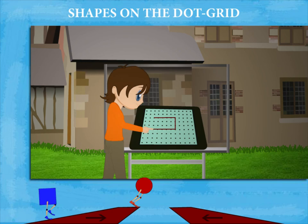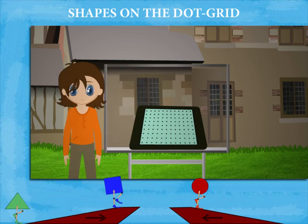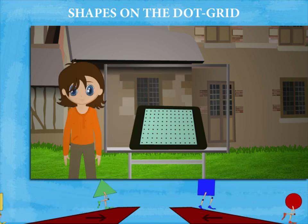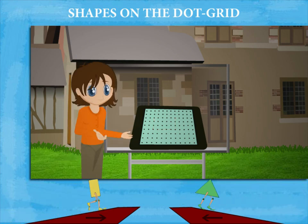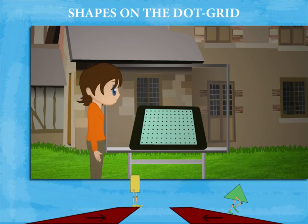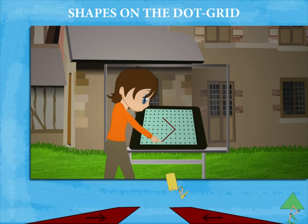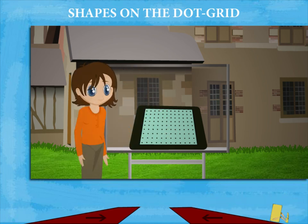This time he draws a four-lined shape with opposite sides equal — this is a rectangle. He draws again a tilted square called a tetragon. Well done, Tim!